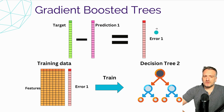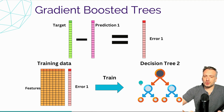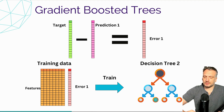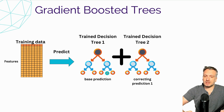Now we're going to use these errors as a target for a new model. We use the same features and train another decision tree, but this time this decision tree is going to learn how to predict those errors. Now we can combine those two trees: the initial tree trained to learn the target, and this second tree trained to learn the error that the first tree was making.